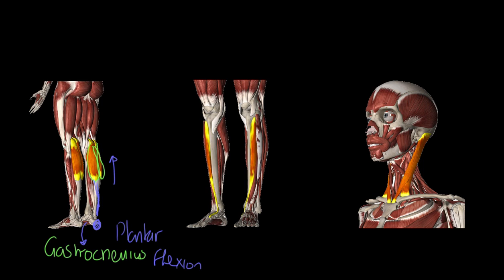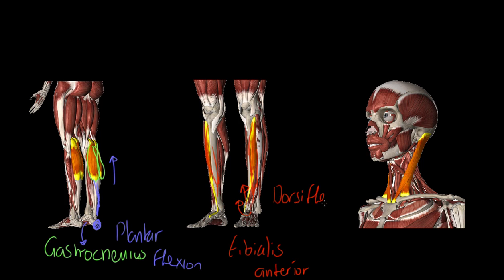This muscle here sits across the shin bone and can get very tender if we do a lot of weight-bearing exercise. It's called the tibialis anterior — tibialis because it's along the tibia, and anterior simply means frontal. When it pulls, it pulls the toes up. We call that dorsiflexion. Note: dorsiflexion is one word; plantarflexion is two words.